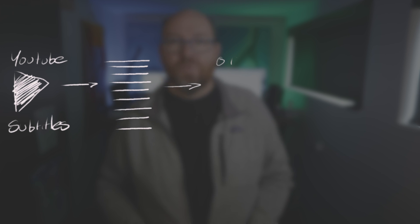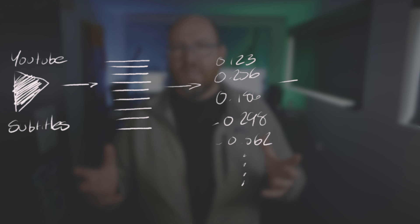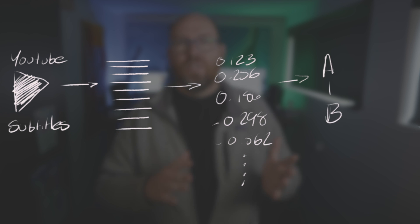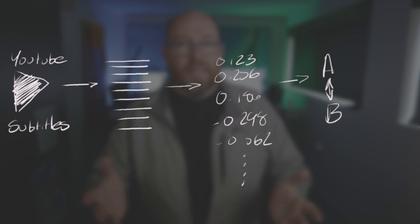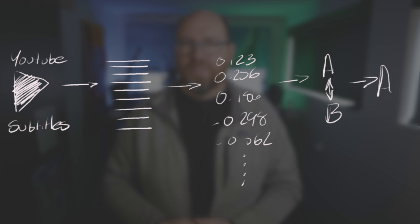At a high level, I'm pulling all my transcripts from my videos from YouTube, then processing them to create text of a certain length. Then I generate embeddings for those bits of text and store them somewhere. Then I do a comparison to find the most similar text to whatever question I have, and output the answer in a way that makes sense for this solution.